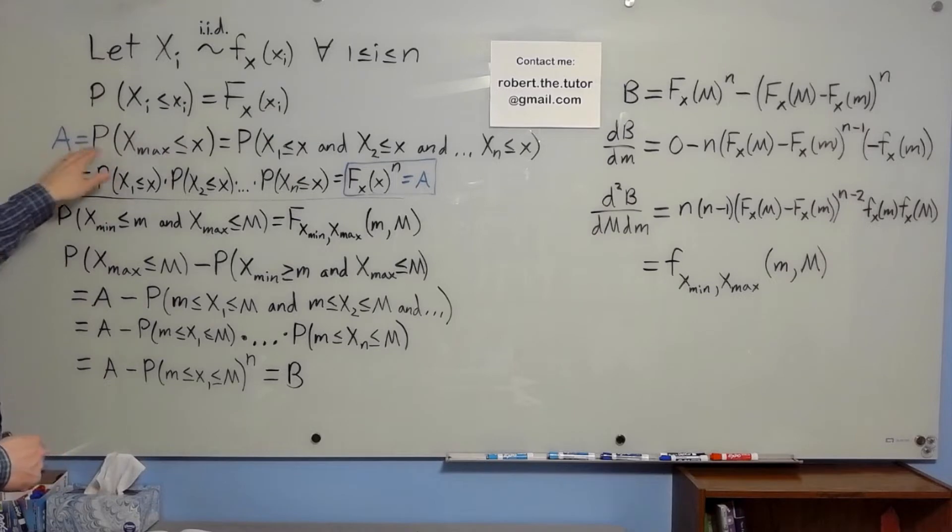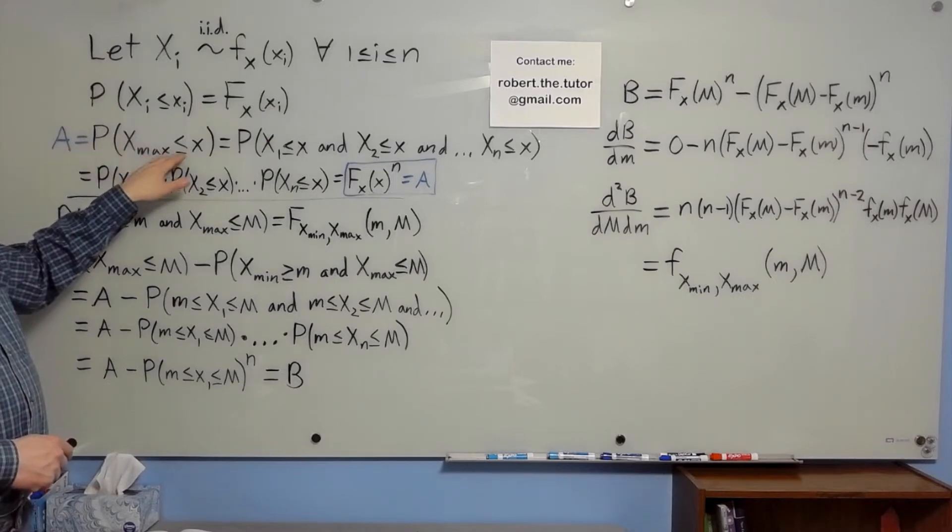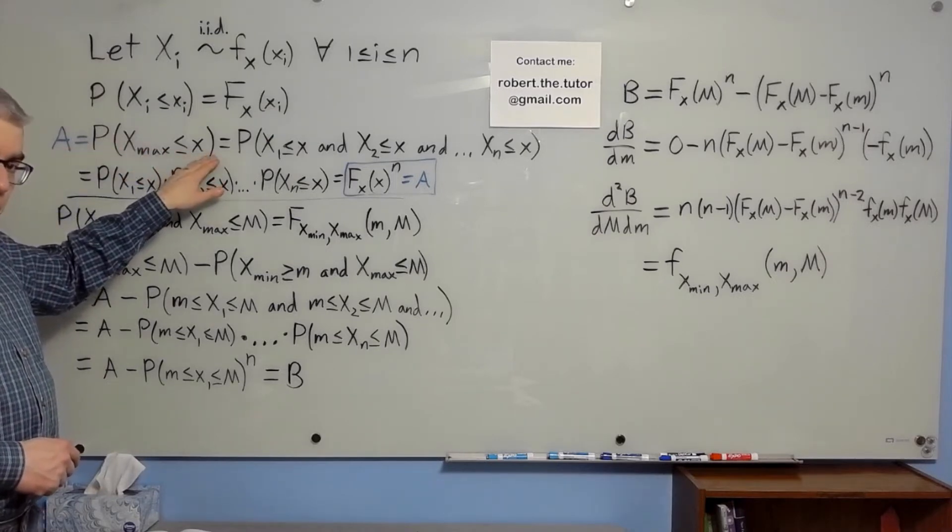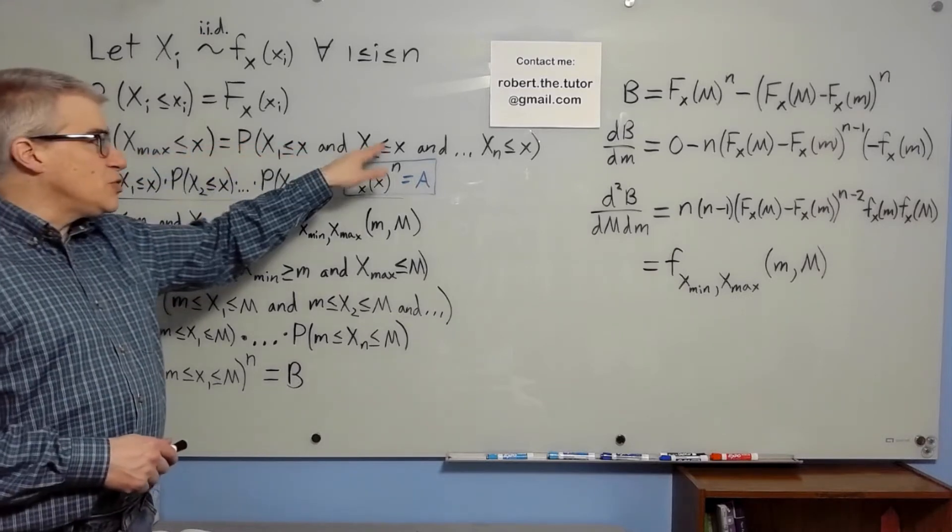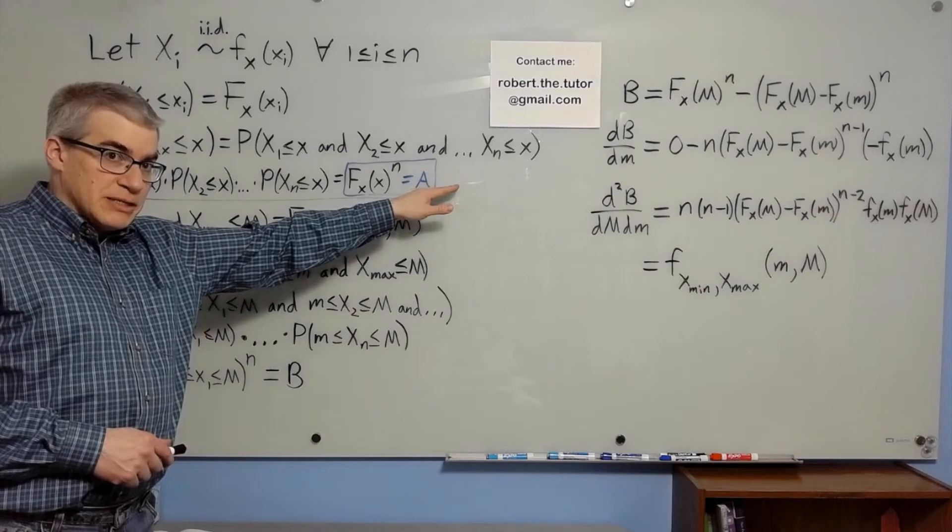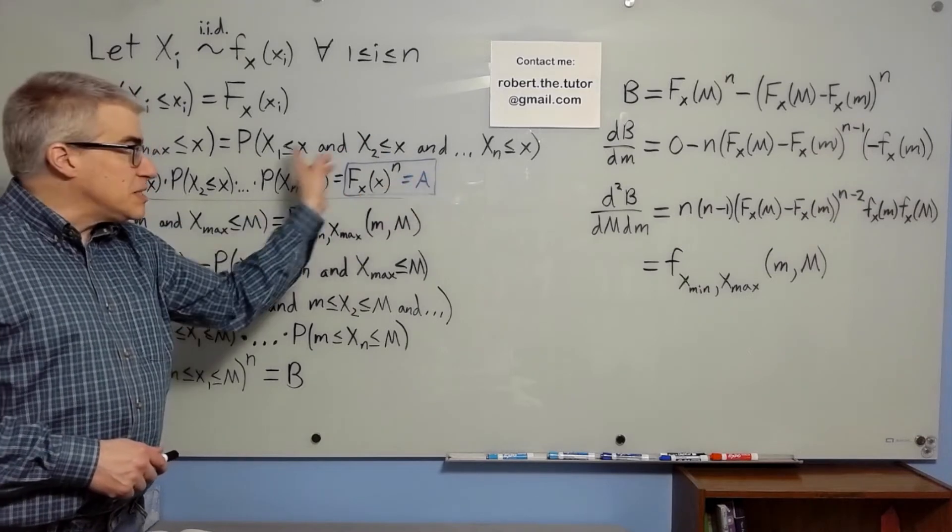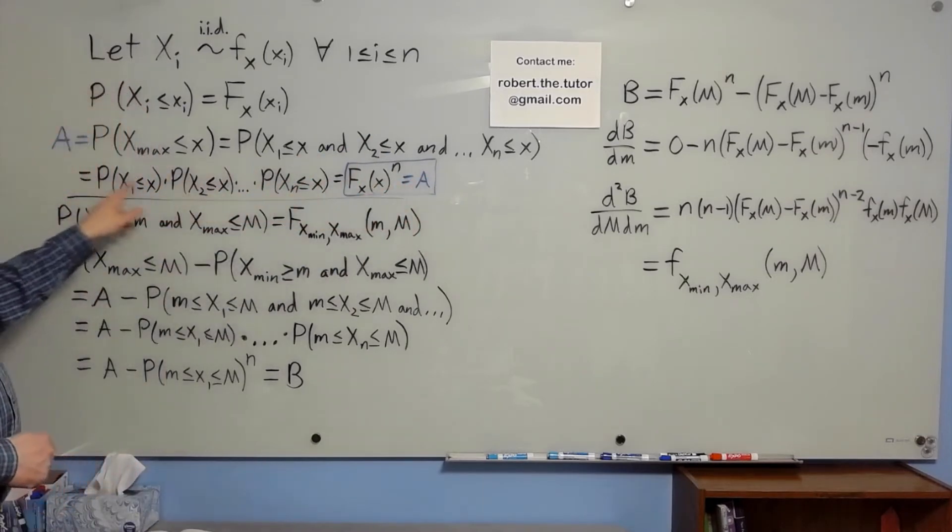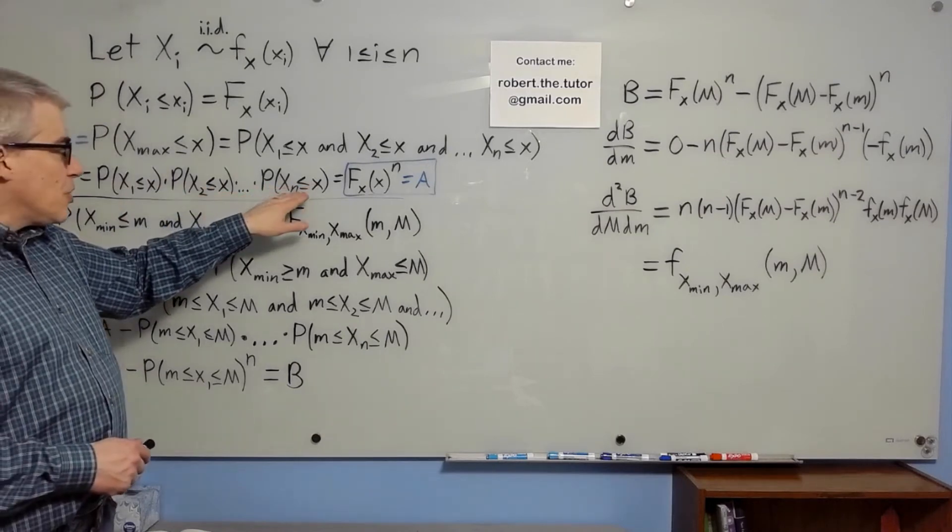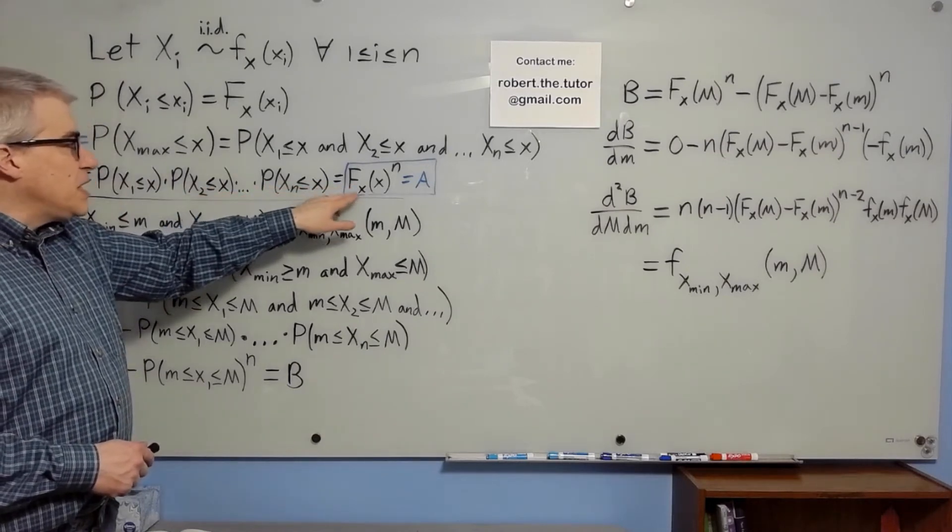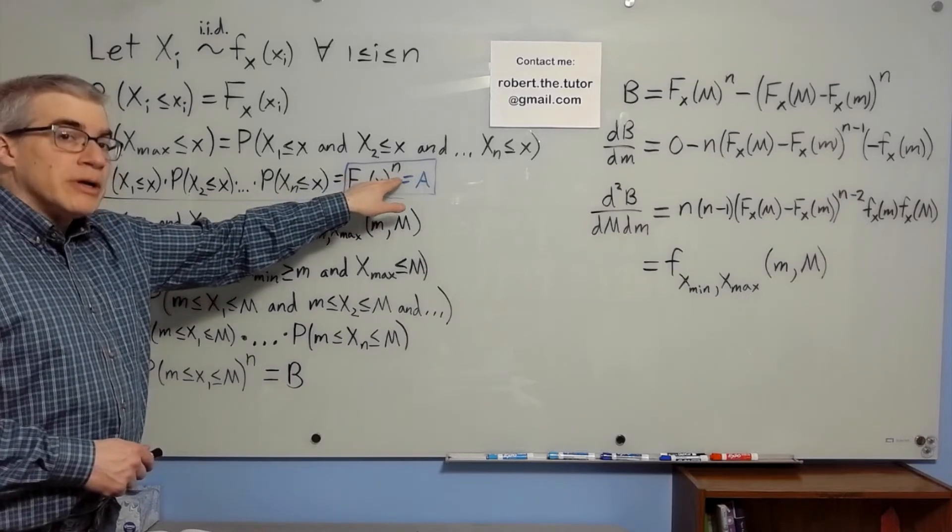Let A be the probability that the maximum is less than or equal to little x. For the maximum to be less than or equal to x, all of them individually have to be less than or equal to x at the same time. Since they're independent, that's the product of the probabilities of the separate events. They're all identical, so that's big Fx of x to the nth power. That's what we call A.